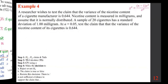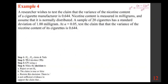A researcher wishes to test the claim that the variance of the nicotine content of a cigarette manufacturer is 0.644. Nicotine content is measured in milligrams and assumed normally distributed. A sample of 20 cigarettes has a standard deviation of 1 milligram. At alpha = 0.05, test the claim that the variance equals 0.644. We are testing sigma squared = 0.644, so that is the claim and that is H0.